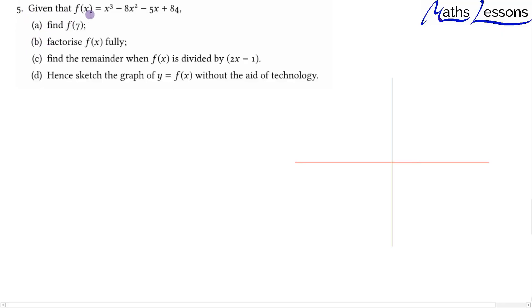In this question, we have the function f(x) = x³ - 8x² - 5x + 84. We're going to find f(7), which is straightforward. So f(7) equals 7³ minus 8 times 7² minus 5 times 7 plus 84.